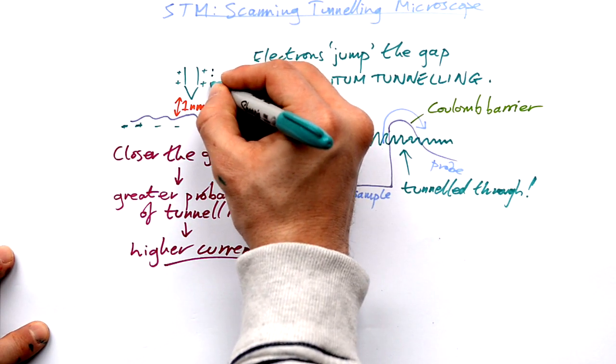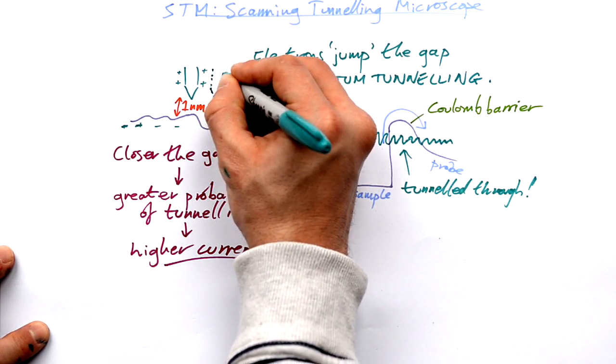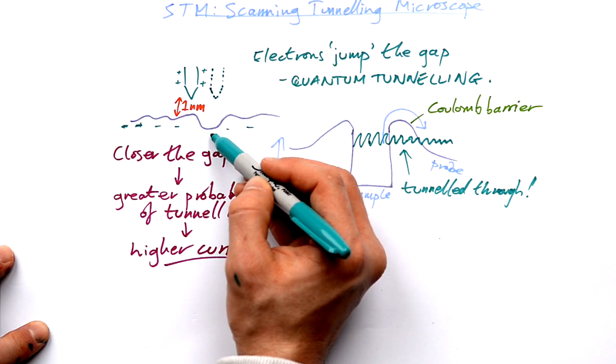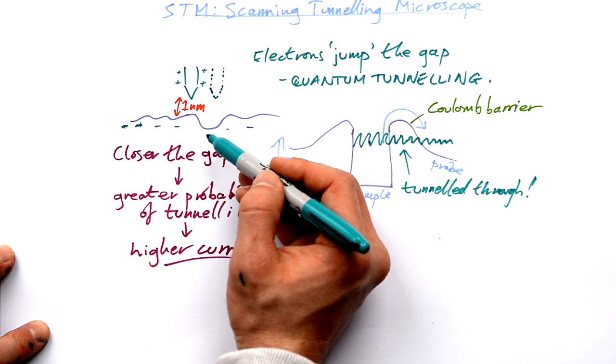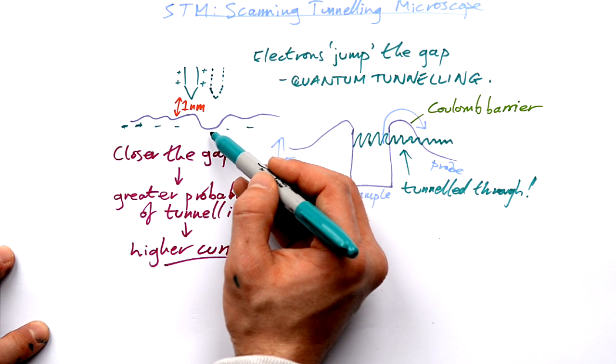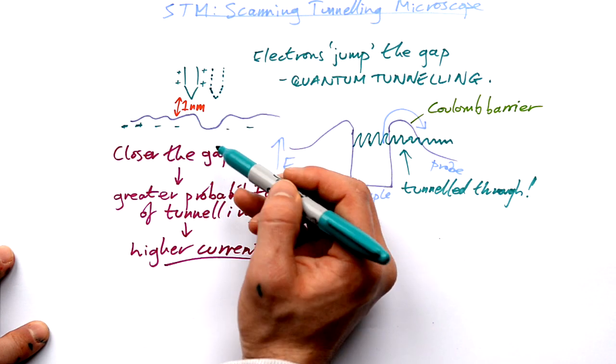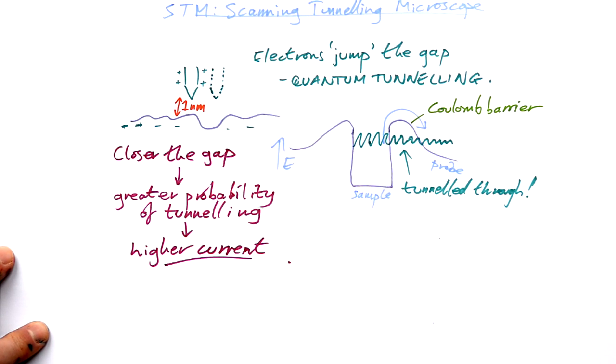So here we would expect quite a few electrons to be jumping the gap here. What if the probe was here instead? Can you see that it's further away from the bottom of this valley here? So we'd have fewer electrons jumping the gap, a lower current, so we know that we have reached a valley here.